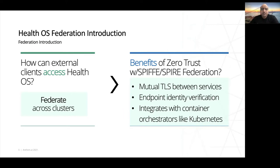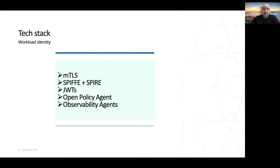The benefits of a federated Zero Trust approach using Spiffy include mutual TLS between services, endpoint verification, and integration with container orchestrators like Kubernetes. The tech stack doing the heavy lifting consists of mutual TLS, Spiffy and Spire, JWT tokens, policy agents for authorization, and observability agents for monitoring.